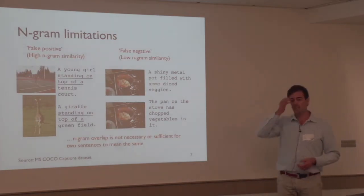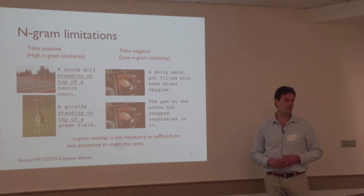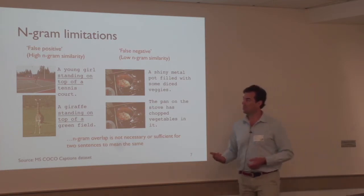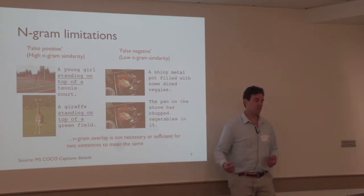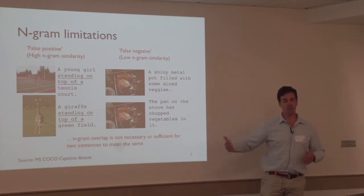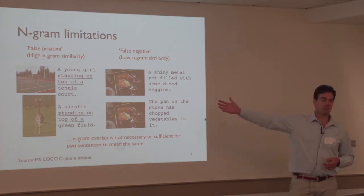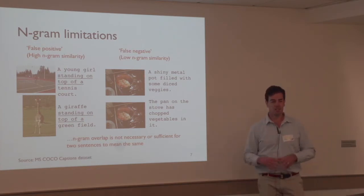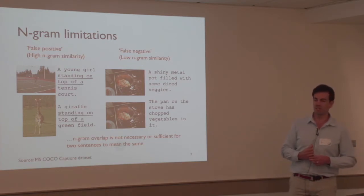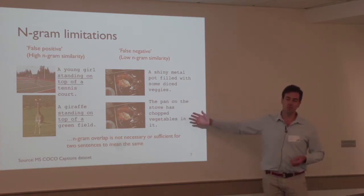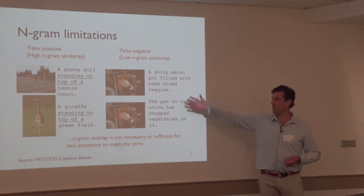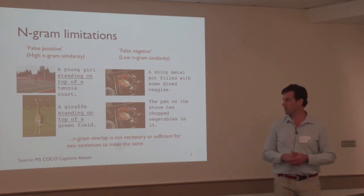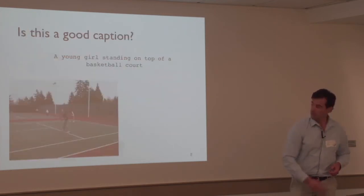It's easy to see why n-grams can fail. These examples from the Microsoft COCO dataset show false positive similarity on the left, where a five-gram like 'standing on top of a something' is common to captions describing completely different images. Although there is some similarity, the visual concepts have quite different meanings. Similarly, there's a false negative case where captions describe the same image with a lot of similarity but not a single word in common—obviously very difficult to capture with n-grams.